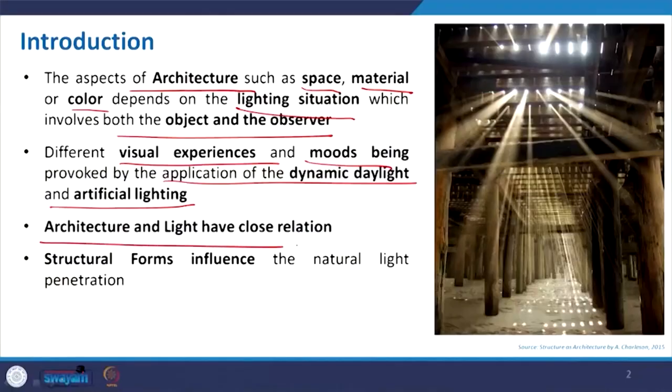When we consider artificial lighting, if we go to a restaurant we do not expect very high exposure like what is required in an operation theatre. Maybe a dim light, a different tint — reddish or whatever colour we prefer — this kind of ambience in a restaurant or party area will change the overall feel. The same form and same infrastructure will look in a different manner. So light and architecture have a very close relation, which we have all experienced.